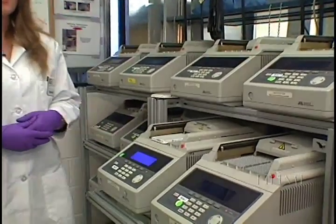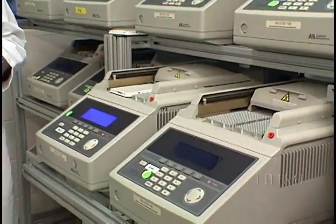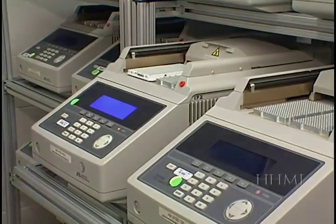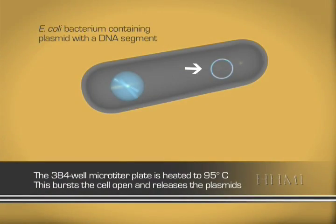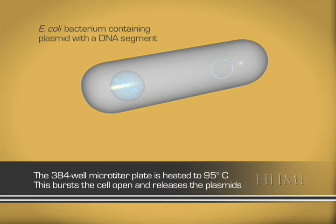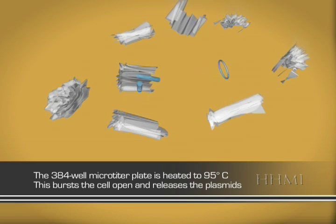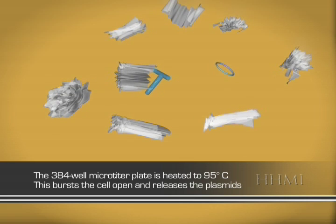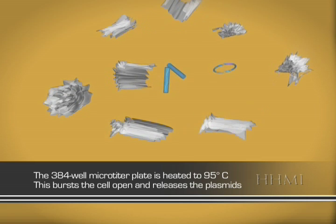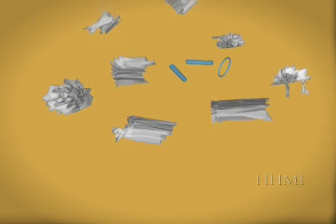At this point, our plasmid with the DNA insert is still contained within the E. coli bacteria. We separate the plasmids from the E. coli by heating the plate to 95 degrees Celsius. That's almost the boiling point of water. This is just enough to burst the cell walls of the bacteria, but not damage the DNA of the plasmids. Now each well of the plate has a solution of plasmids and broken bits of E. coli bacteria.